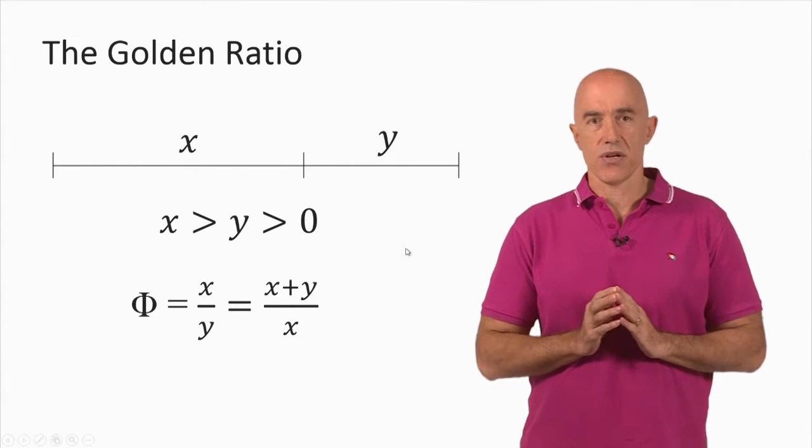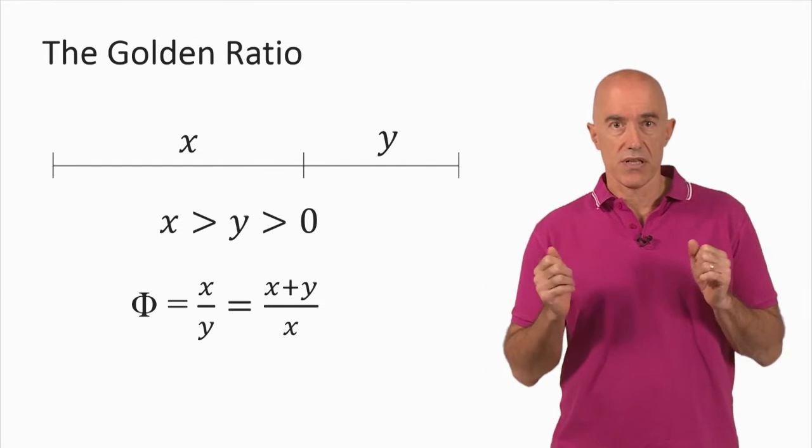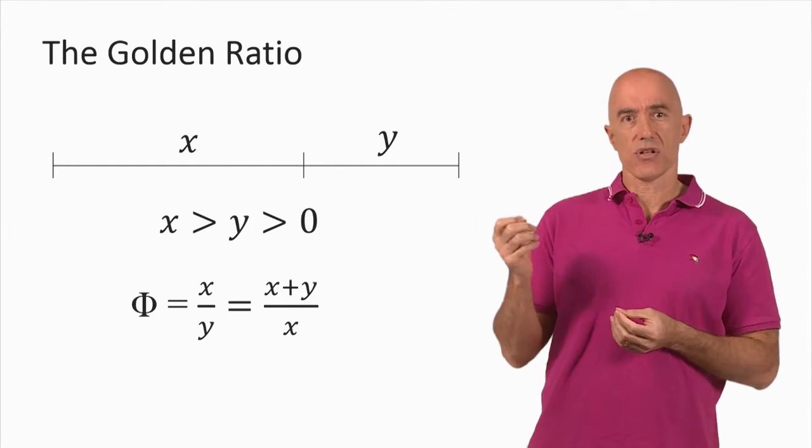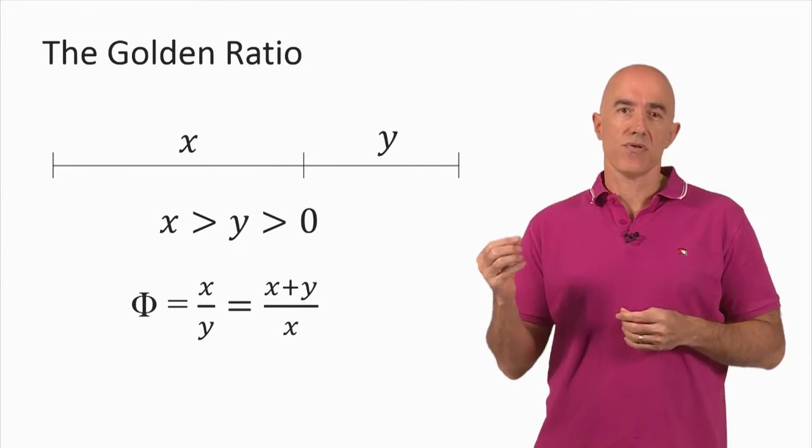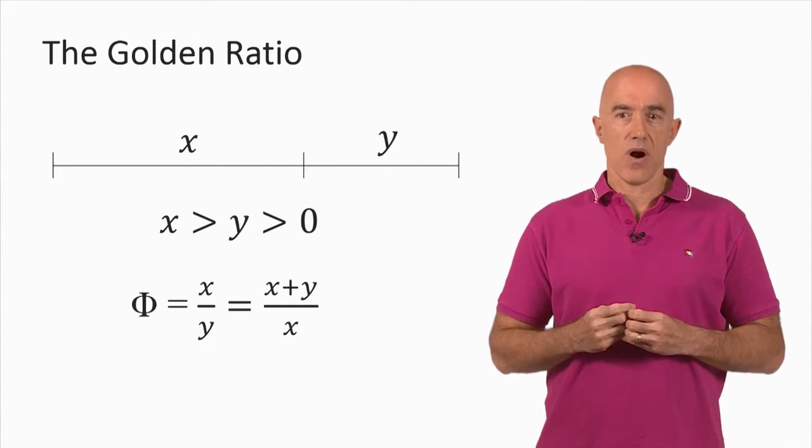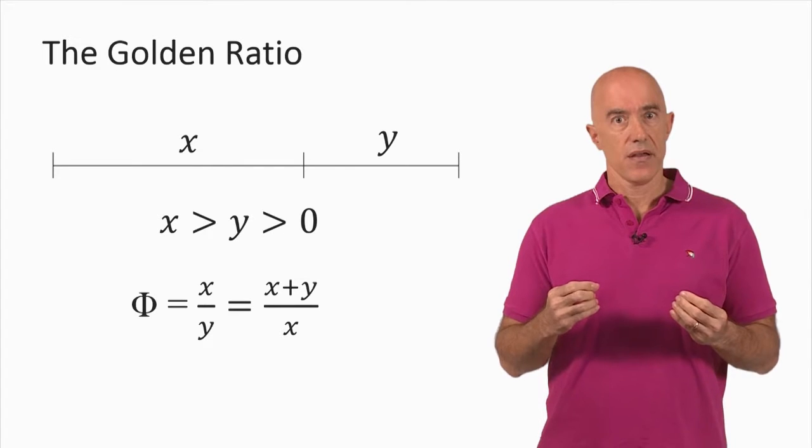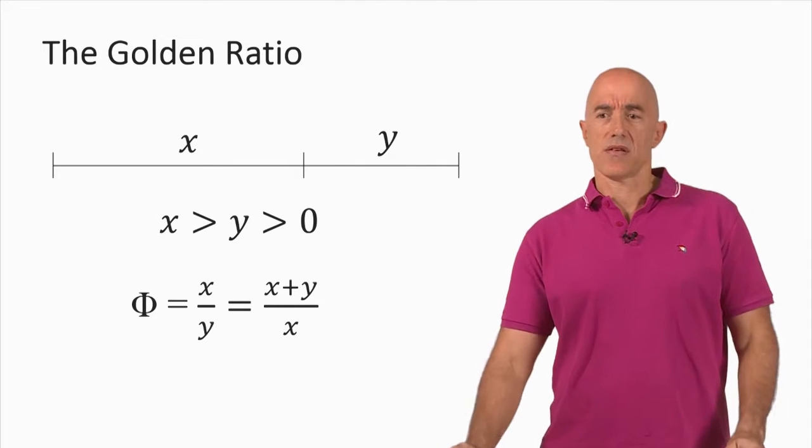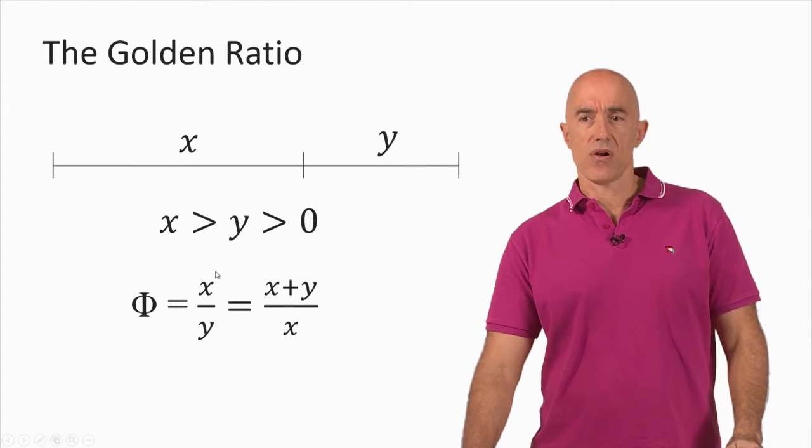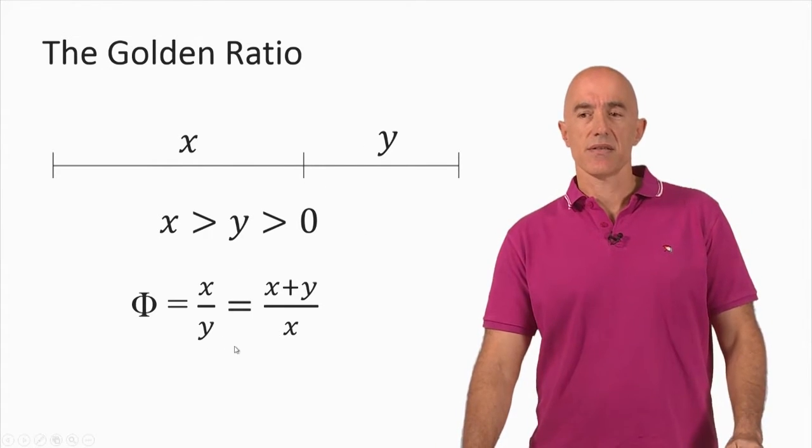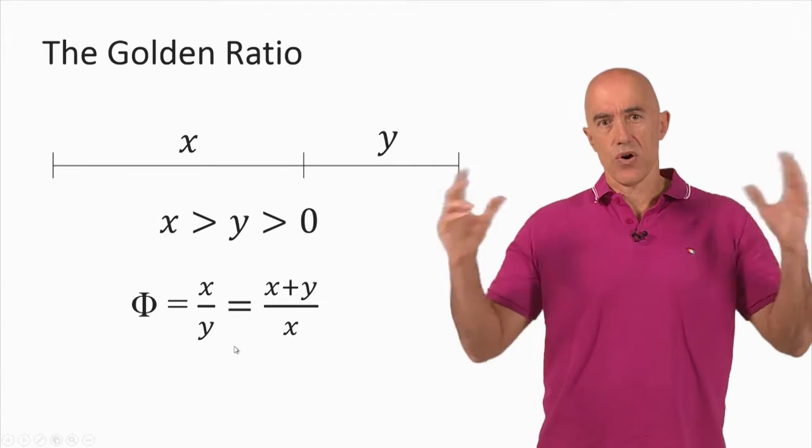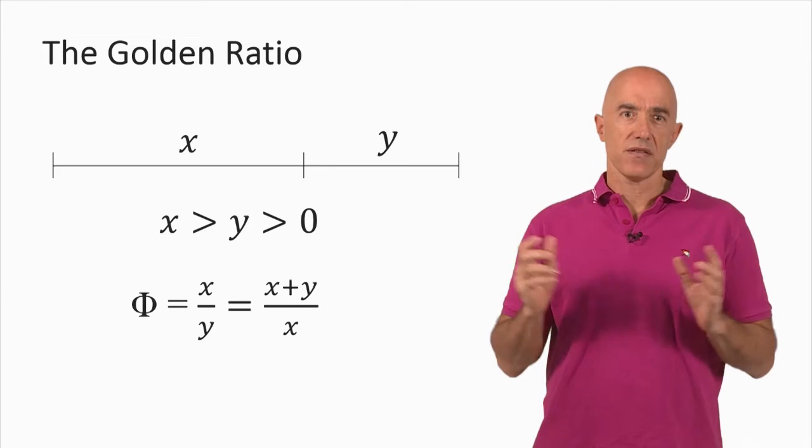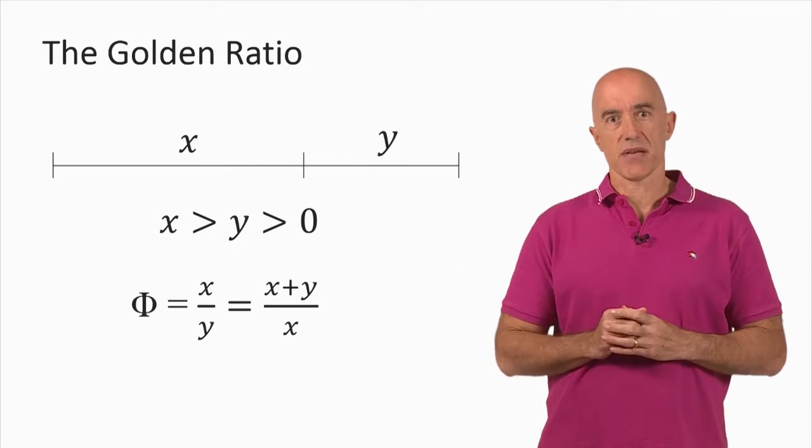So what is the golden ratio? We're going to call the golden ratio capital Phi, the Greek letter Phi. It's the ratio of the larger line segment X to the smaller line segment Y, X over Y, where these line segments satisfy a particular equality: that the larger segment over the smaller, X over Y, is the same as the total length of the line segment, X plus Y, divided by the larger segment X.